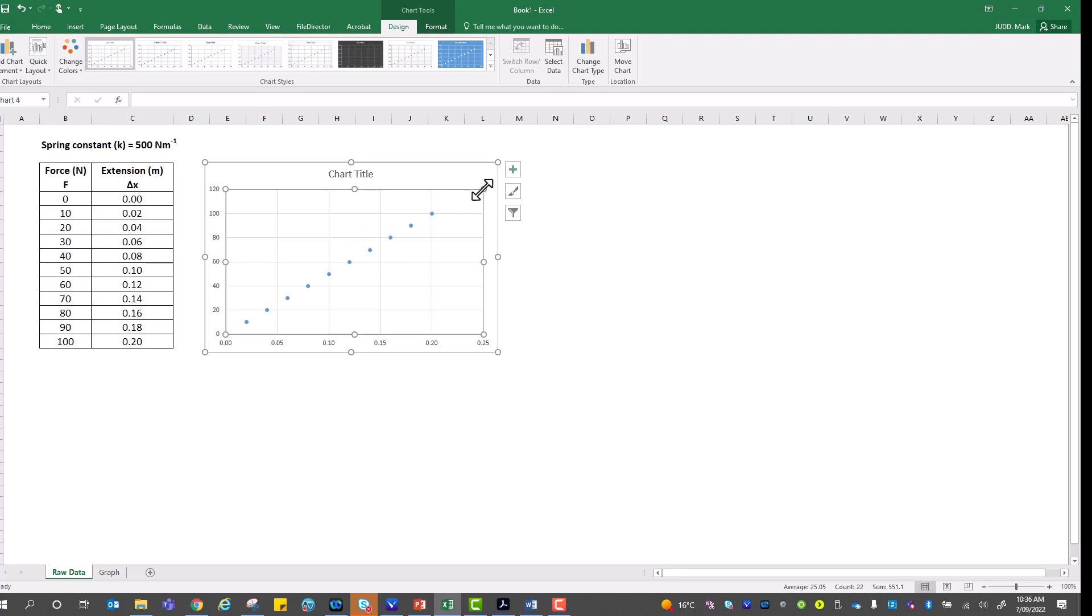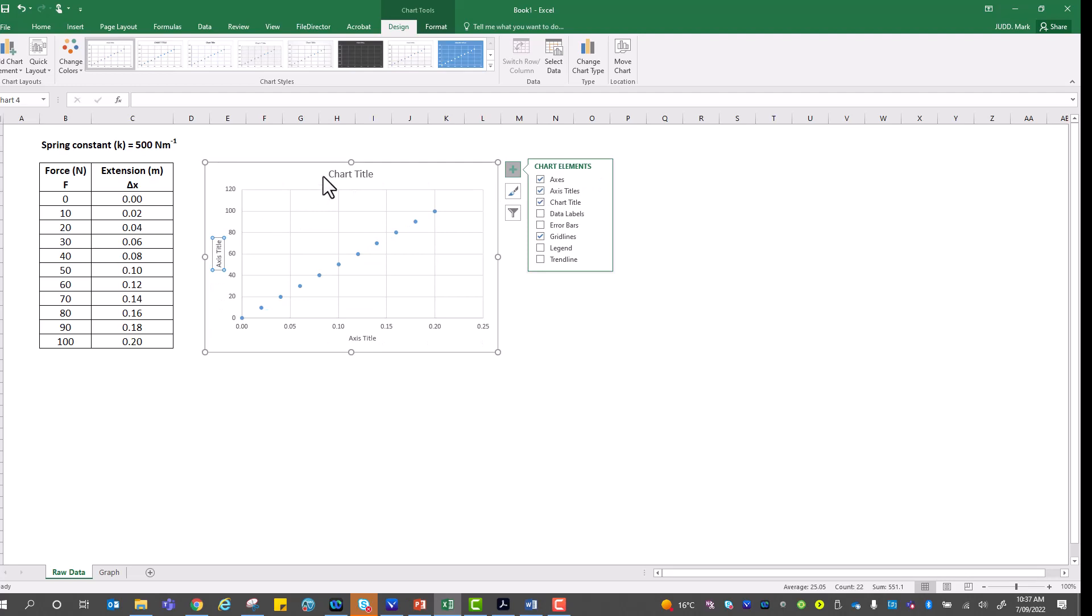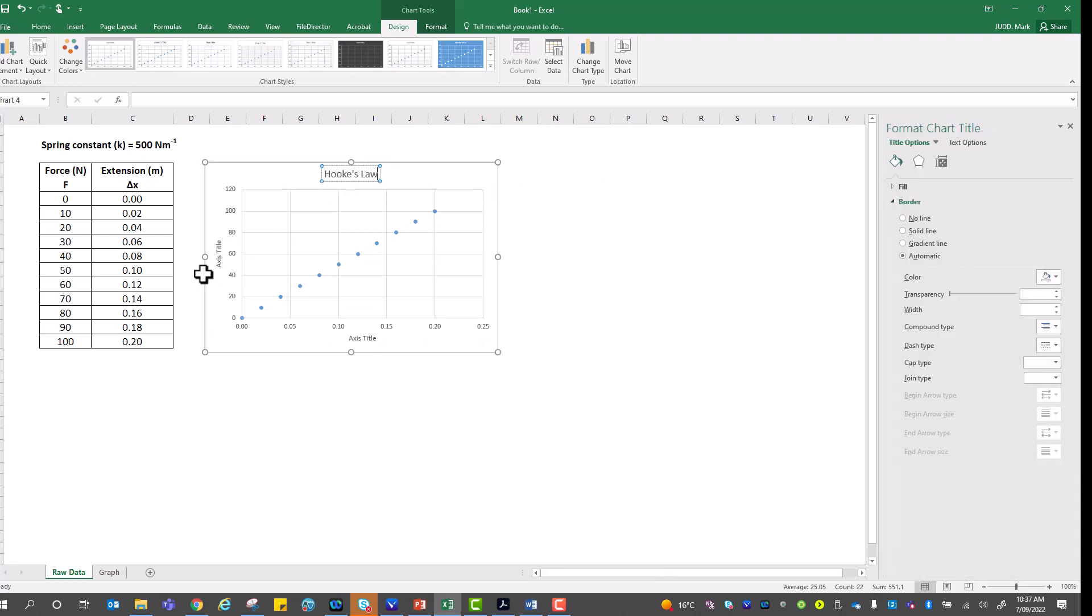All we need to do now is really dress up our graph. Depending on what version of Excel you have, you might find my add chart elements button to the right or to the top of your screen. I'm going to use the one on the right. Let's have a look at the title. I'd like to change this title to Hooke's Law. The Y variable is force in newtons. The extension is in meters.